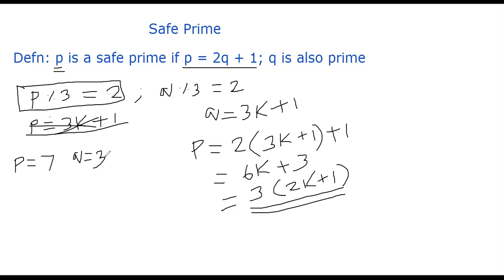Other than that, p mod 3 is always 2. And the q mod 3 is always 2 for p and q as prime and p being safe prime. That's the important fact.